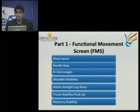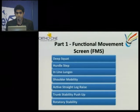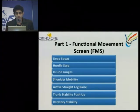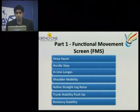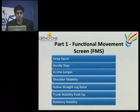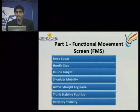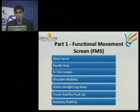The functional movement screen is just a tool — it is not an exercise. It has seven components: the first is the deep squat, second is the hurdle step, third is inline lunges, then shoulder mobility, the active straight leg raise, trunk stability push-up, and rotatory stability.